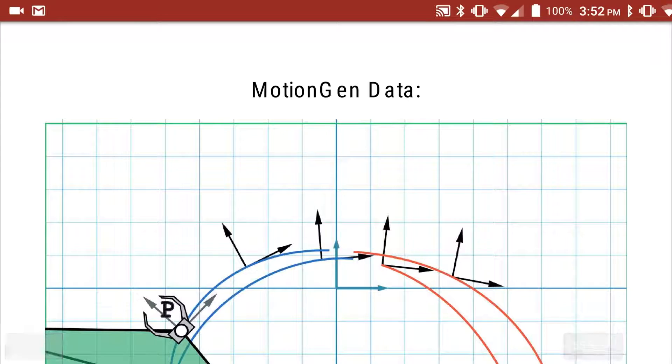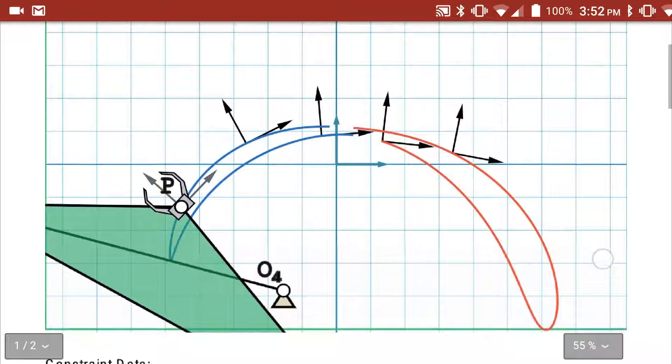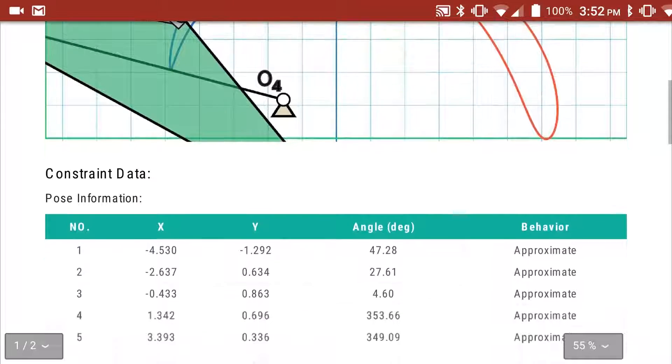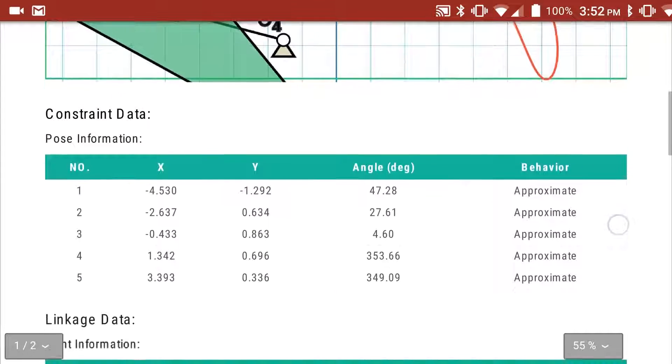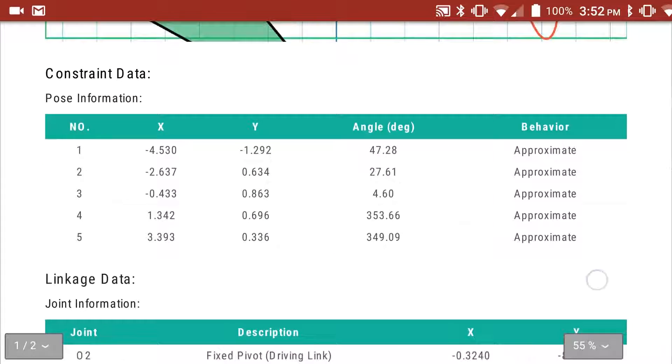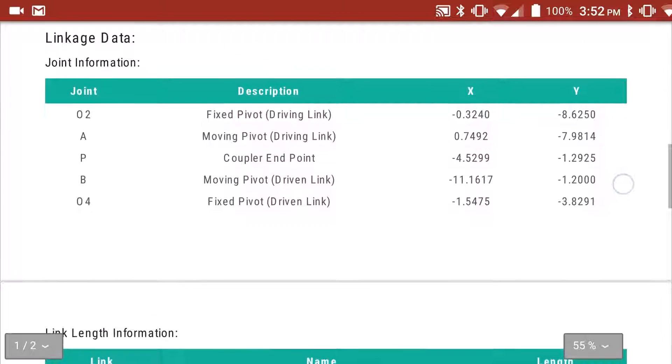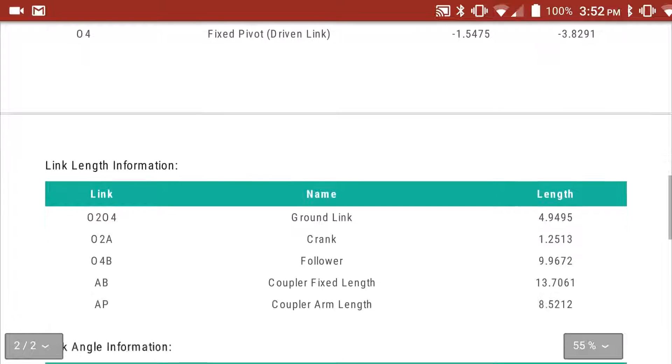You can see here there's a picture of the mechanism, information about the constraints including x and y location and angle of each constraint. There's information about the linkage itself including the x and y position of each joint and below that the length and angle of each link, so this can be very useful if you wanted to actually construct this linkage.